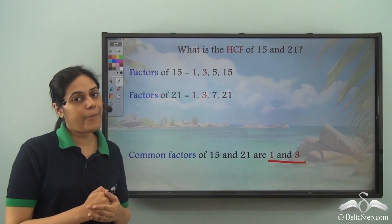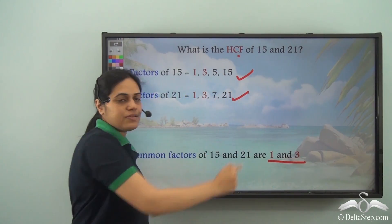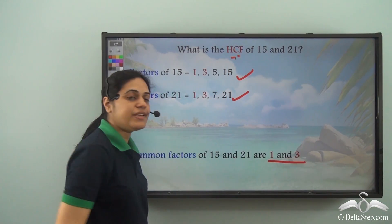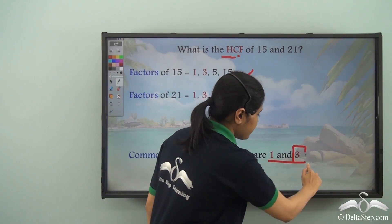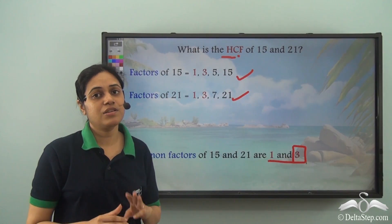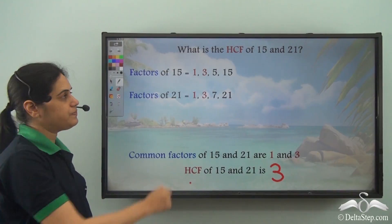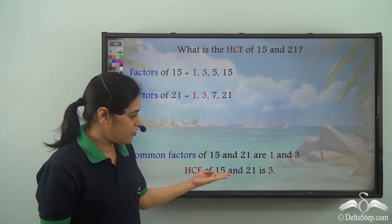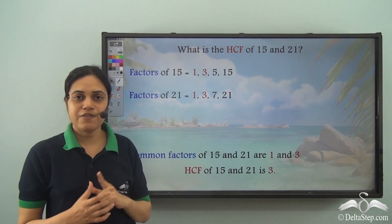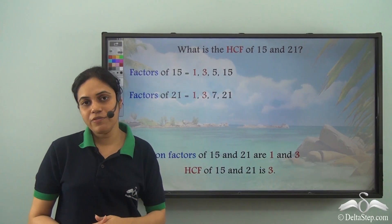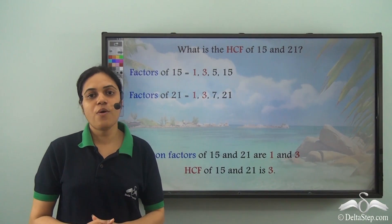Now, H is for highest, so we find the highest among the common factors. Between 1 and 3, the highest is 3. So the HCF, or highest common factor, of 15 and 21 is 3. To summarize: first find the factors, then find the common factors, then find the highest among them — that is the HCF of two numbers.